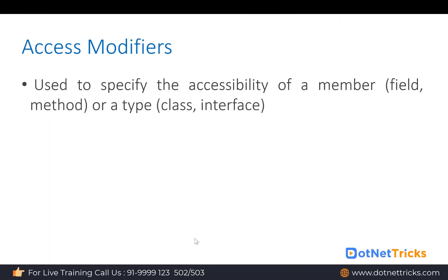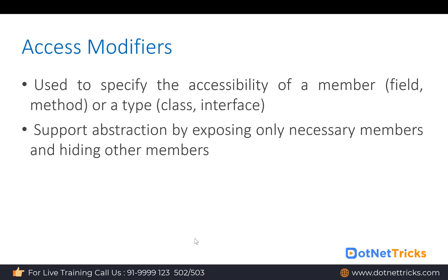Let's start with access modifiers. In C#, access modifiers are used to specify the accessibility of a member — like fields and methods in a class or interface — and they also specify the accessibility of a type such as a class or interface.